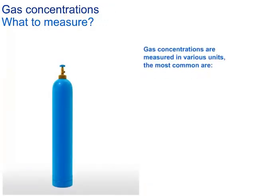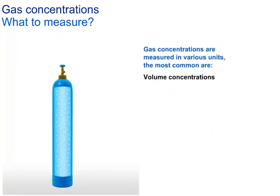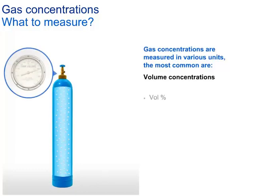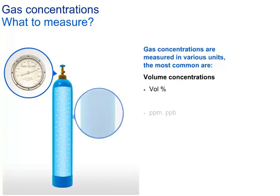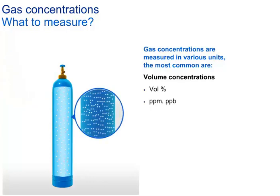These gas analyzers measure gas concentrations in various units. The most common measurements are the concentration in a volume or volume fraction. In chemistry, the volume fraction is defined as the volume of a component divided by the volume of all components of a mixture prior to mixing. The common unit is volume percent. Also very common is the measurement in parts per million, which is a number without units.